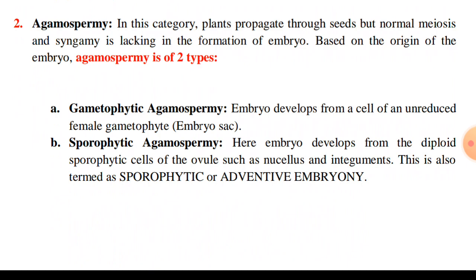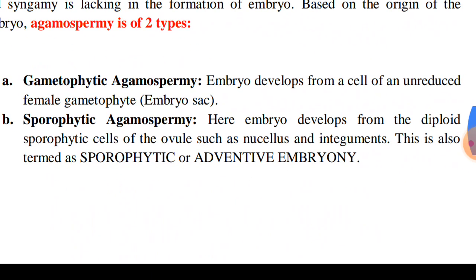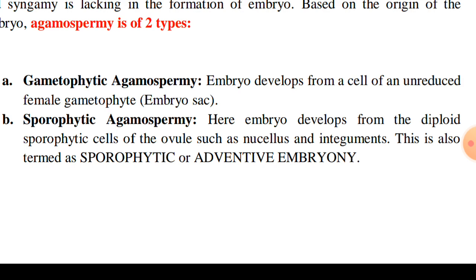Based on the origin of the embryo, agamospermy is of two types. Number one, gametophytic agamospermy, where the embryo develops from a cell of an unreduced female gametophyte, that is the embryo sac. Second, sporophytic agamospermy, where the embryo develops from diploid sporophytic cells of the ovule such as nucellus and integuments. This is also termed as sporophytic or adventitious embryony.